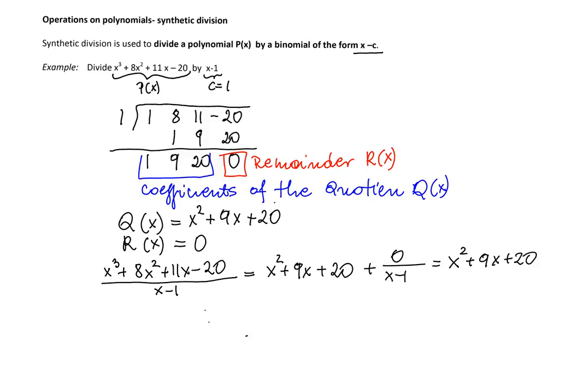We can write it also in a different way by multiplying both sides by x minus 1. And that means that we'll write x cubed plus 8x squared plus 11x minus 20 is equal to the quotient, which is x squared plus 9x plus 20, times x minus 1.